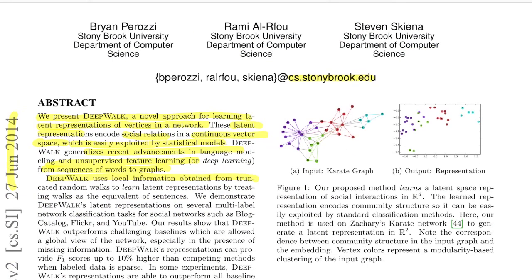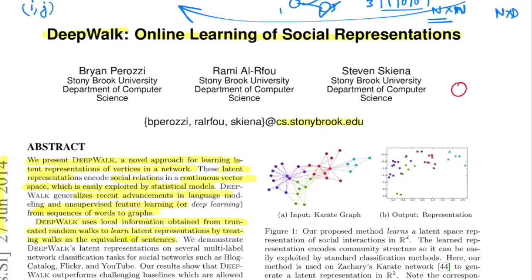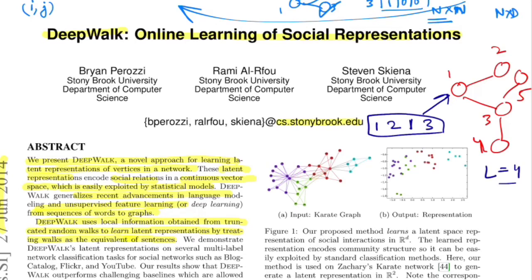DeepWalk uses the local information obtained from truncated random walks to learn latent representations by treating random walks equivalent to sentences. Let's take an example. Consider a graph like this and label all the nodes 1, 2, 3, 4, and 5. Considering this to be your starting point, the next node that you jump to is selected uniformly at random. So let's say you start from 1, you go to 2. From there, you just have one way of coming back again, so again come to 1, then you come to 3. Let's consider we are generating random walks of length 4. This is one of the sequences that we generate if we start from node 1.